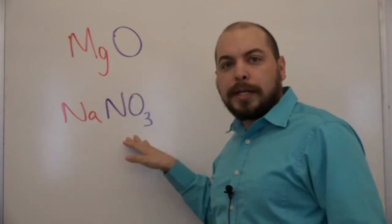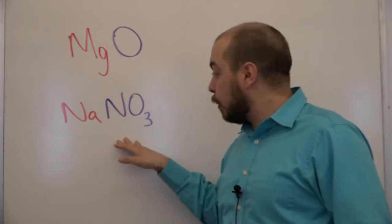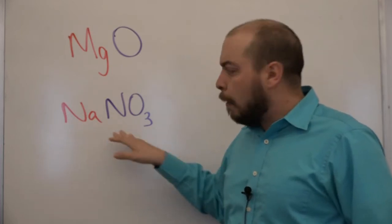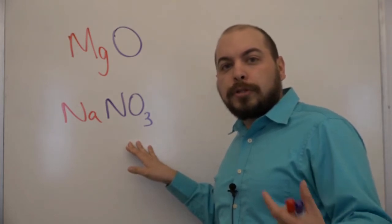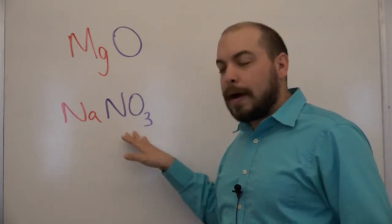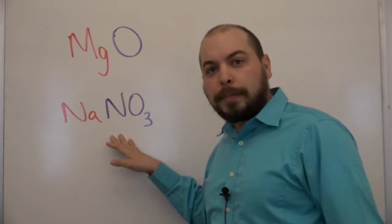A ternary would be an example of sodium nitrate here which is going to have sodium but then nitrate which is a polyatomic ion. So it's ternary because of the fact that we have more than simply two elements in the compound.